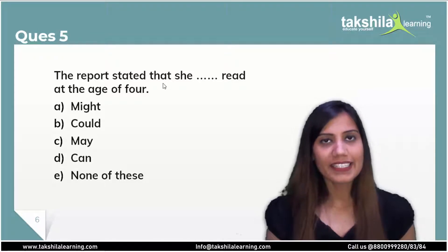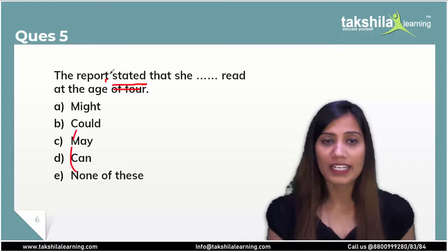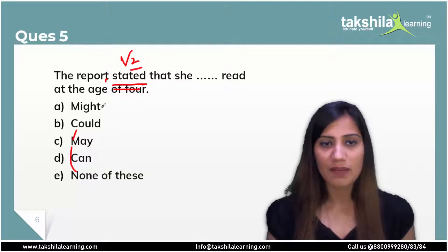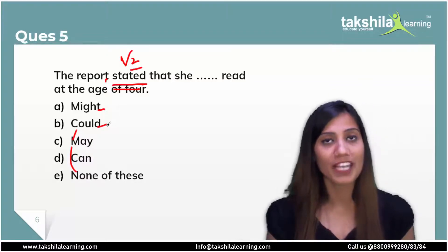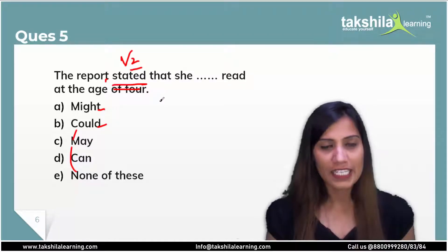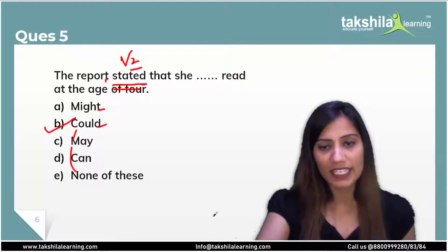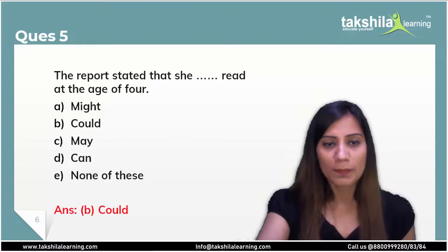Question 5: 'The report stated that she dash read at the age of 4.' Now look at 'stated' — that is the second form of the verb, showing a past sentence. So the modal will be could or might. Here the report stated that she was able to read at the age of 4 — it is about ability. So we use could. For question 5, the correct answer is option B: could.